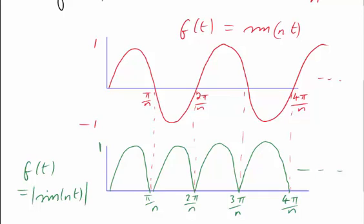That's because the part underneath is identical in shape to the part above, apart from being underneath. When we flip it up, it just repeats the part above, and so the period gets halved. Let's write that down. P equals π over n.